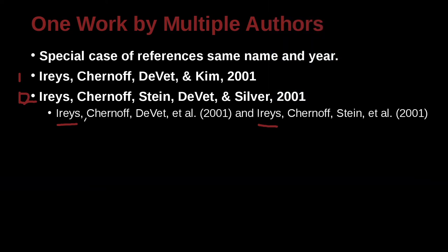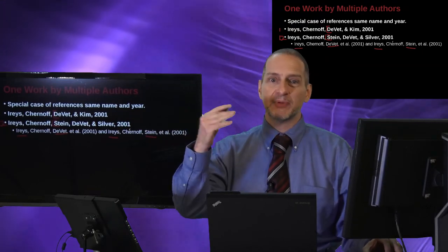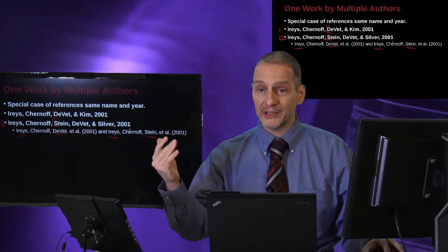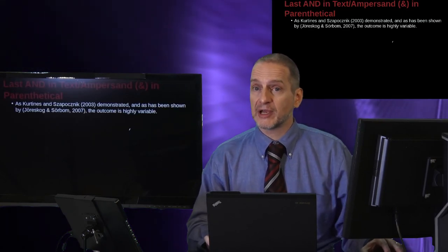So what do we do to solve that problem? We go ahead and list out the names until there's a difference. So here we have Iries, Chernoff, Yvette — and here we have Iries, Chernoff, Stein — because here it's Yvette and here it's Stein. This is where the author list changes. So now we are able to look at the reference list at the back and see these papers are different, which paper is which. That's the key point: help the reader understand how to find the correct paper.